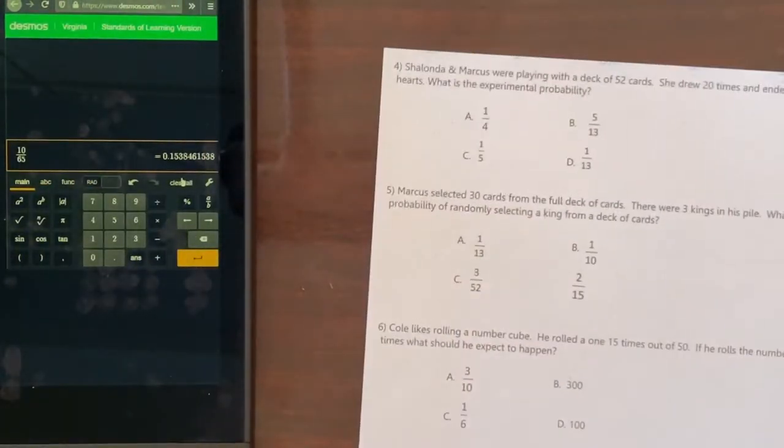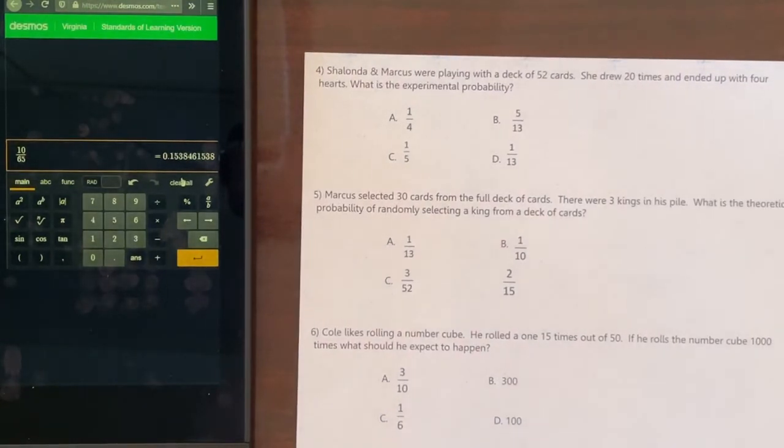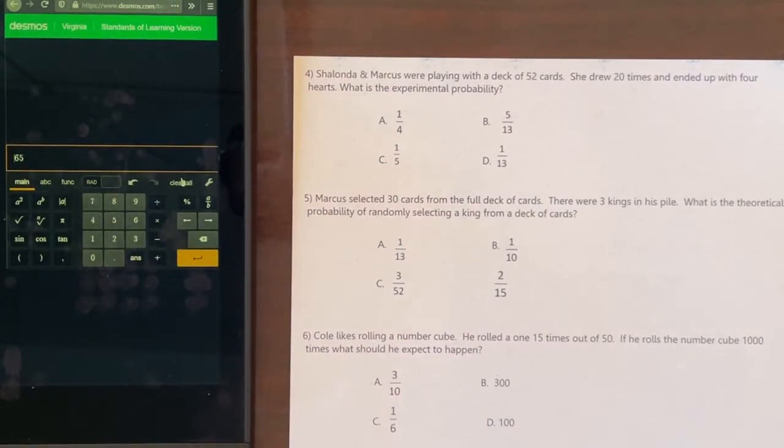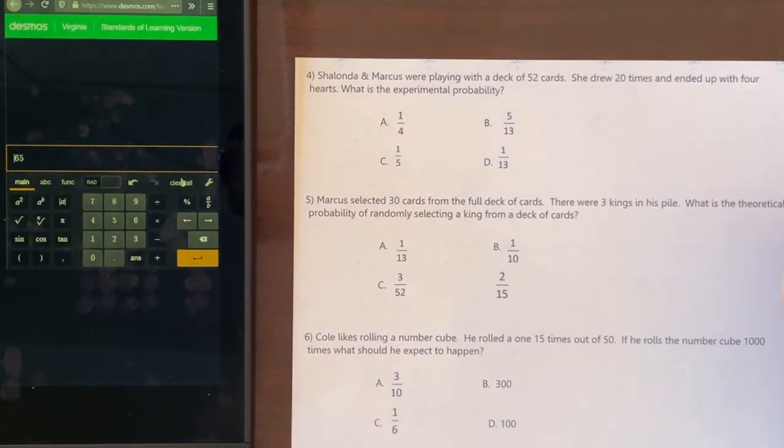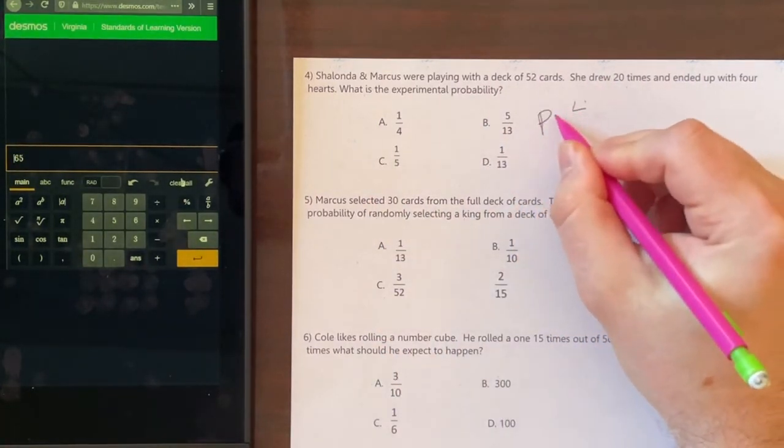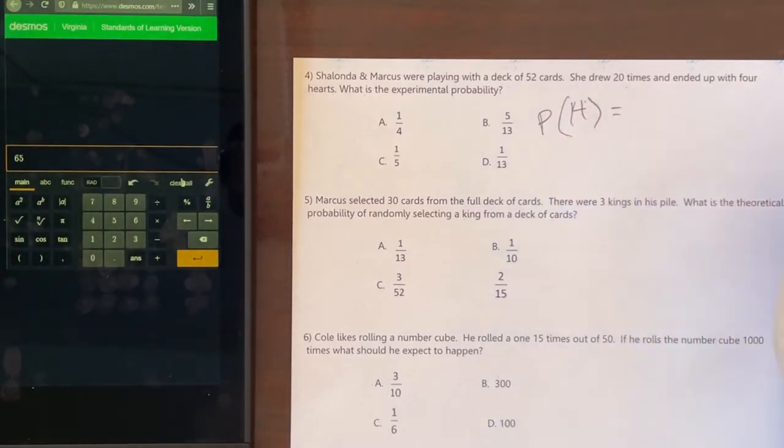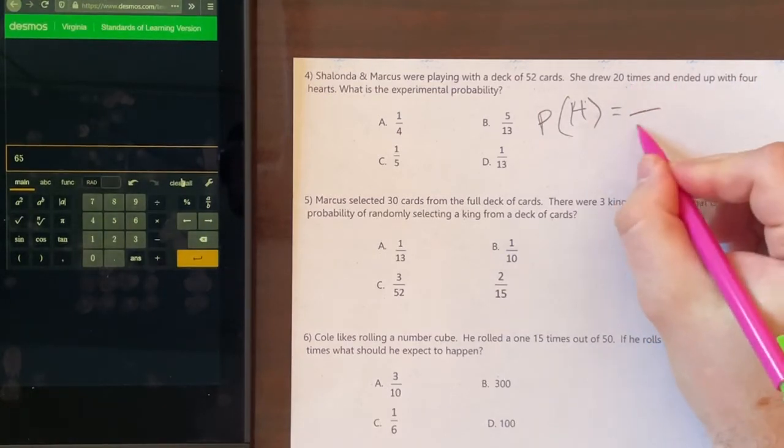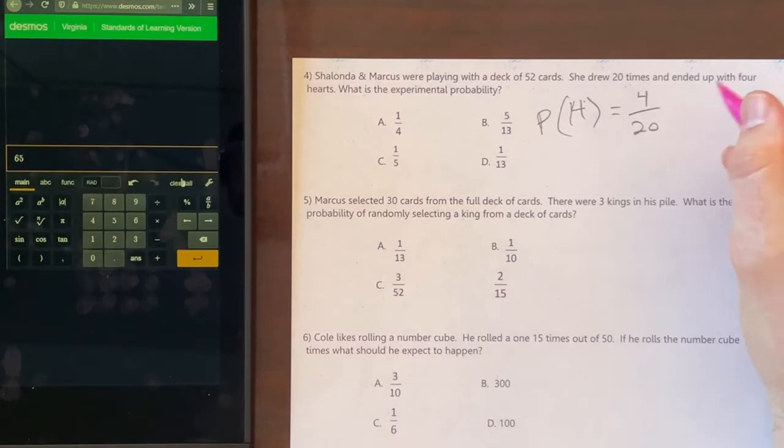Now in number 4, it says Charland and Marcus were playing with a deck of 52 cards. She drew 20 times and ended up with 4 hearts. What is the experimental probability of getting hearts? She drew 20 times. The result was 4 hearts. So probability of getting hearts, even though there's a deck of 52 cards, she drew 20 times. So it would be 20 denominator, 4 of which are hearts. This is the same as 1 fifth. Make sure you can reduce those fractions.